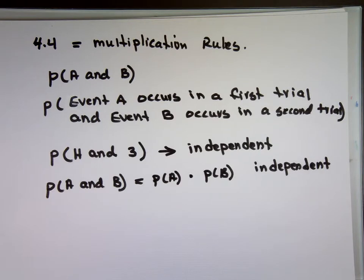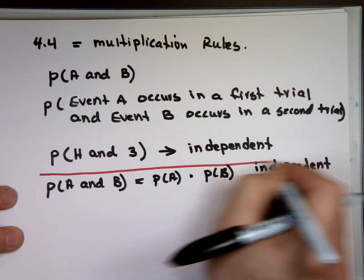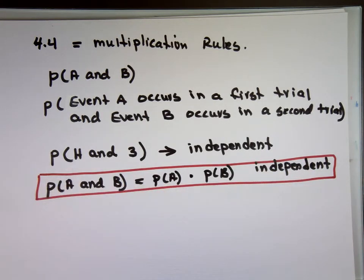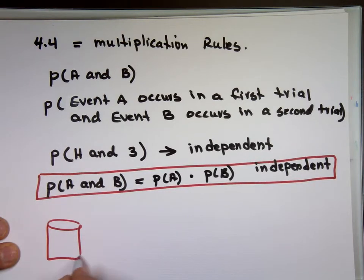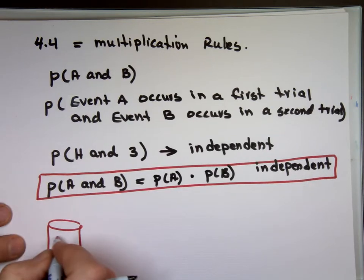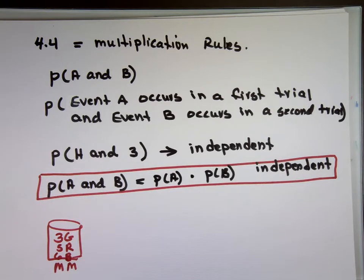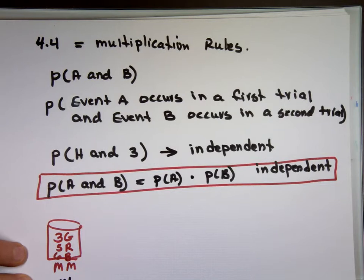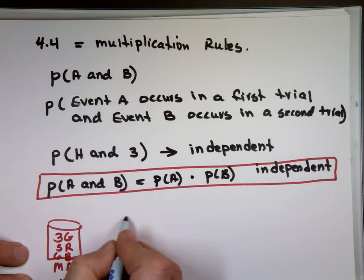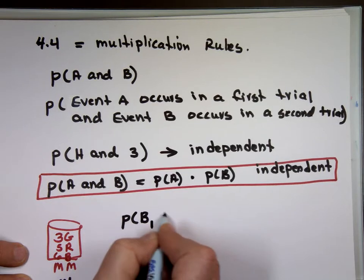But what happens when the events are not independent? With independent events, whatever happens in the first event is not going to affect the probability of the second one. Let me give you an example. I have a bag of M&Ms here. It has three green, five red, and six blue. So in this bag we have 14 M&Ms. If I take two blue ones — what is the probability of selecting a blue on the first draw and a blue on the second draw?